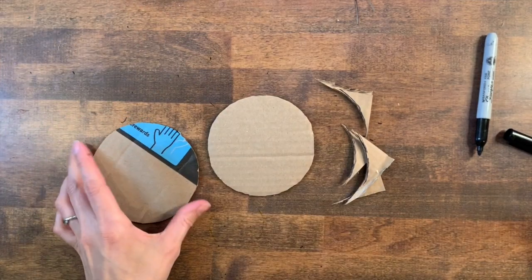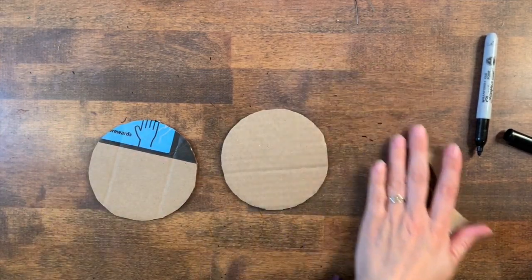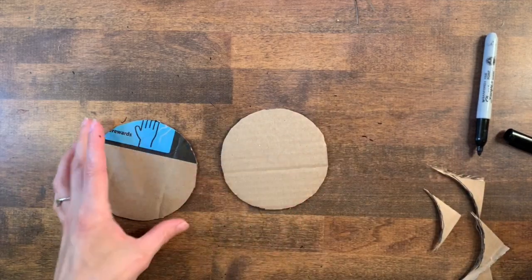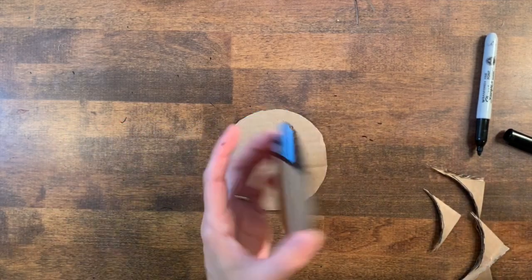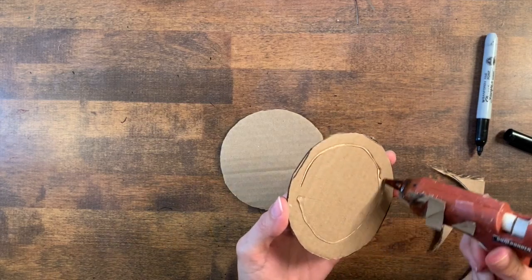With these two pieces cut out, it's time to glue them together. Be sure that you glue them with the corrugation going in opposite directions. You don't want your lid to warp when you're paper mache-ing it.